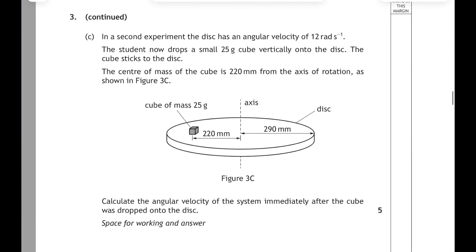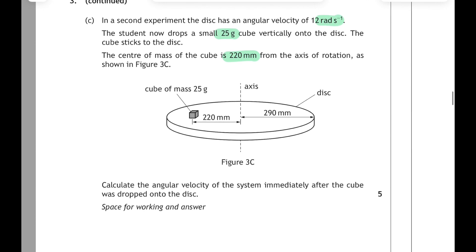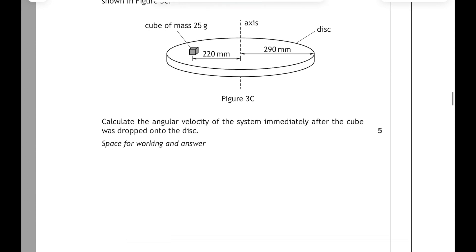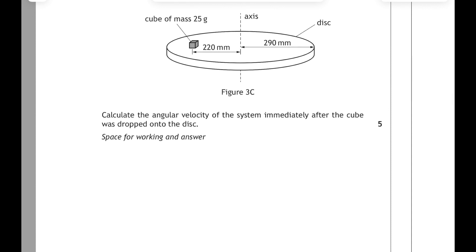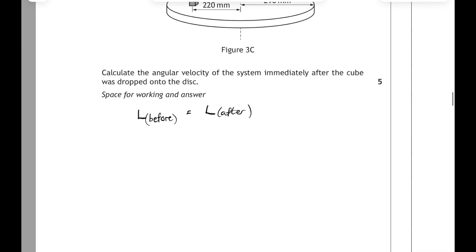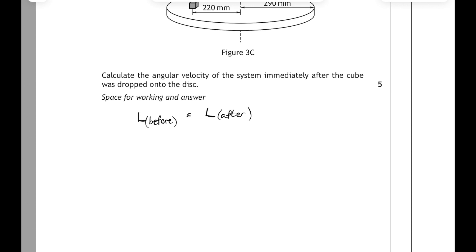3 part C: in a second experiment the disc now has an angular velocity of 12 rad/s, and the student drops a small 25-gram cube vertically onto the disc. The cube sticks to the disc, and the centre of mass of the cube is 220mm from the axis of rotation. We have to calculate the angular velocity of the system immediately after the cube is dropped. This is a conservation of angular momentum question — total angular momentum before equals total angular momentum after.